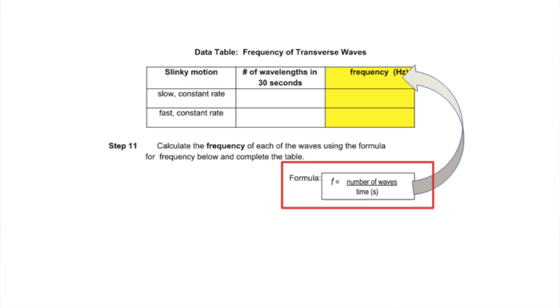Now you will use the formula in step 11 to calculate the frequency of the two different waves using the numbers you just recorded. Remember, we counted for 30 seconds.